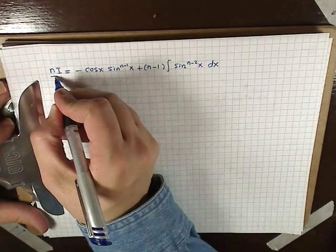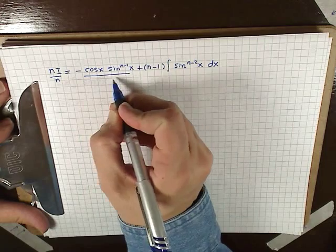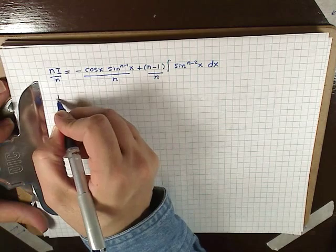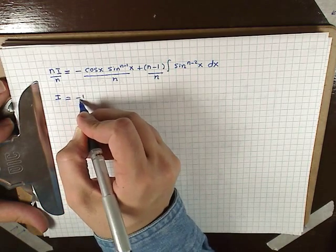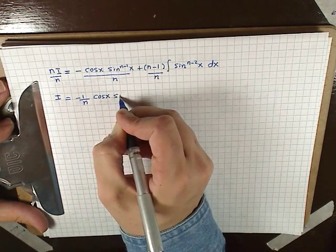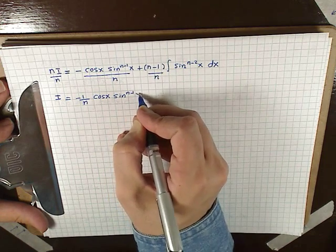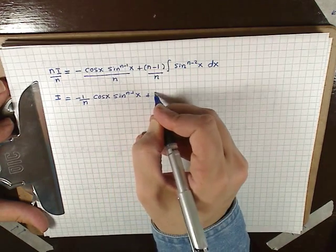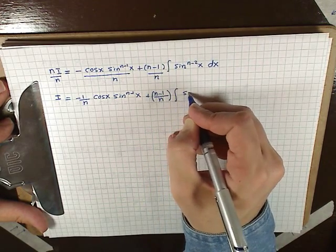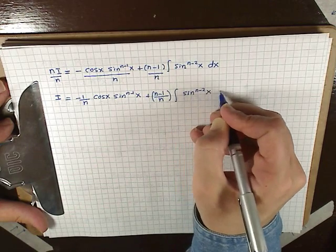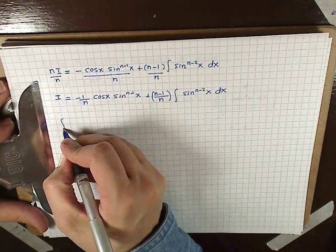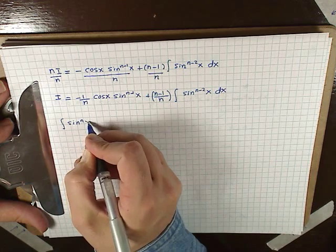Let's divide both sides by n. Dividing by n, we obtain I = -1/n cos(x) sin^(n-1)(x) plus (n-1)/n times the integral of sin^(n-2)(x) dx. Now let's not forget what I represented — this is the integral of sin^n(x) dx.